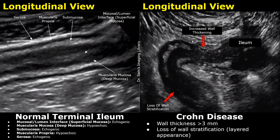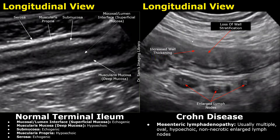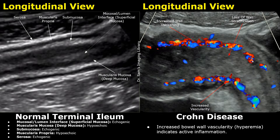In some cases of Crohn's disease, you may find enlarged mesenteric lymph nodes next to the bowel loop. Here we can see three enlarged hypoechoic lymph nodes. The bowel wall is thickened and there is loss of wall stratification. On color Doppler, the bowel wall will show increased vascularity — we will see multiple Doppler signals. Normally, we do not see any color Doppler signals in the bowel wall. This increased vascularity indicates active inflammation.